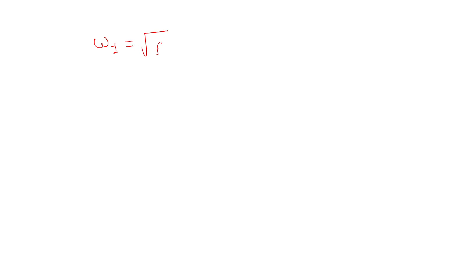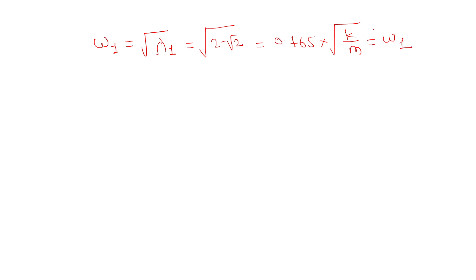We get λ1 = 2 − √2 and λ2 = 2 + √2. The natural frequency ω1 equals the square root of λ1, which is √(2 − √2) = 0.765 × √(k/m). Similarly, ω2 = √λ2 = 1.848 × √(k/m). This is the benefit of this method — whatever k and m values you have, just substitute them.